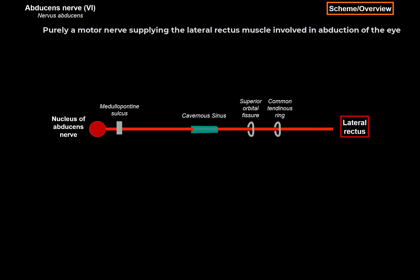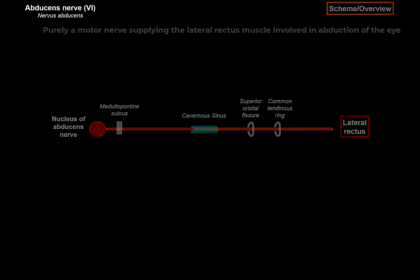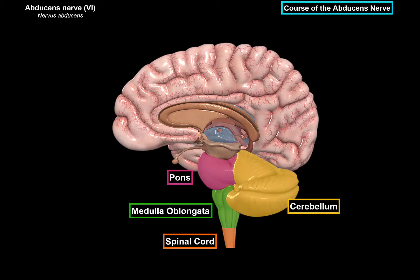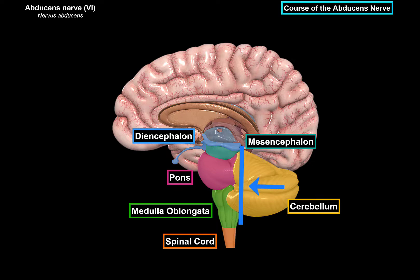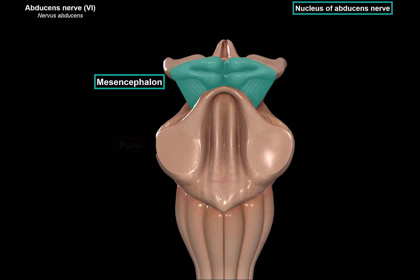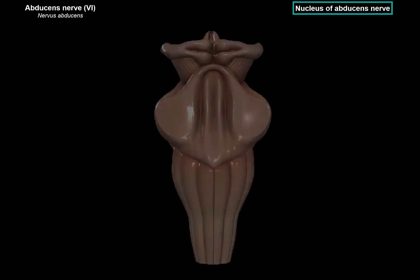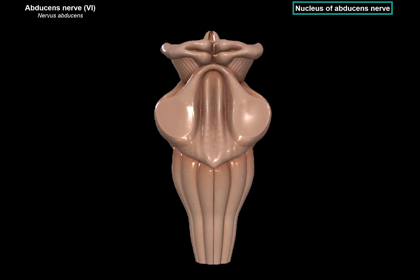Let's dive a little deeper into its neuroanatomy. Here we see the brainstem — the medulla oblongata, cerebellum, pons, mesencephalon, and diencephalon. If we remove the cerebellum and focus on the brainstem from the posterior side, we still see the mesencephalon, pons, and the medulla. On the posterior side of the brainstem, we can see something called the rhomboid fossa, which is a key location where several cranial nerve nuclei are located.